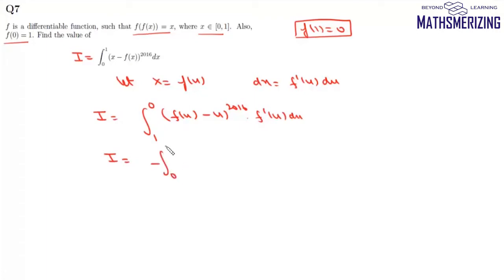So we can write this integral as minus the integral from 0 to 1. Now (f(u) - u) is the same as (u - f(u)) because we have an even power. So it'll be (u - f(u))^2016 f'(u)du. In definite integrals, if the limits are the same and the function is the same, we can change the variable.